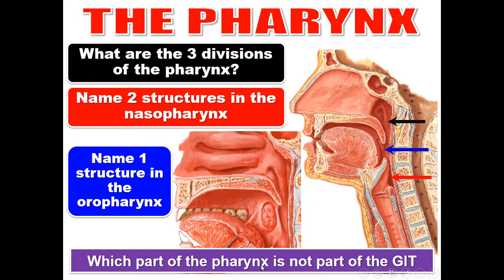Which part of the pharynx is not part of the GIT? It is the nasopharynx. The oropharynx and the laryngopharynx are parts of the gastrointestinal tract. The laryngopharynx is continuous with the esophagus.